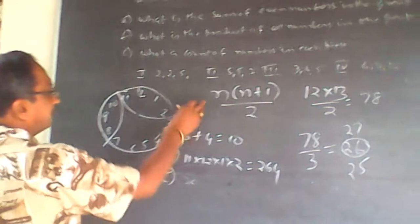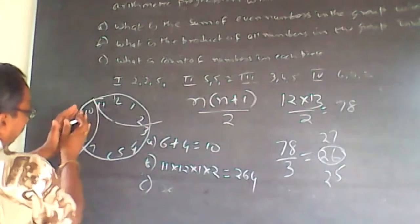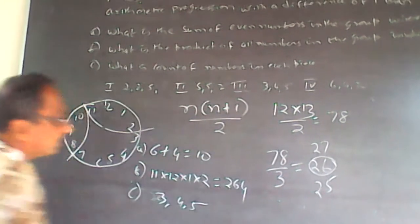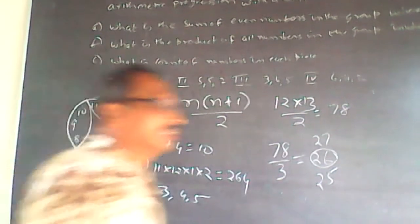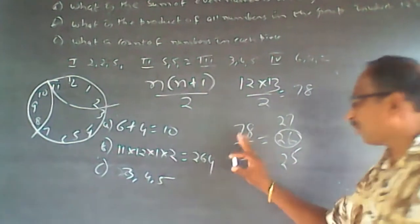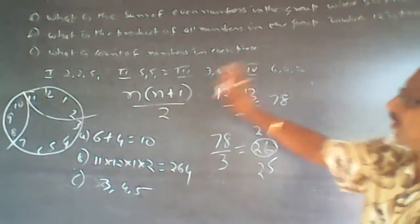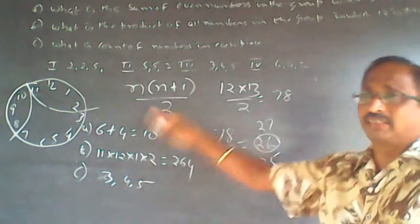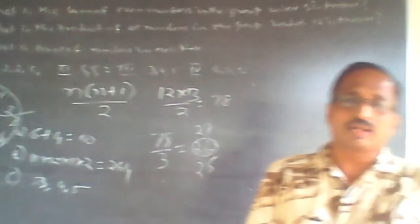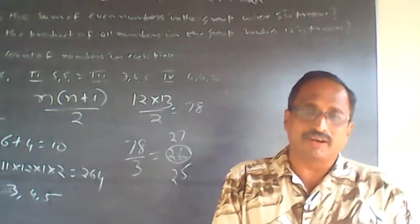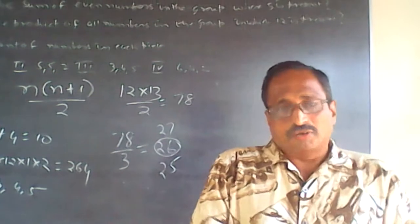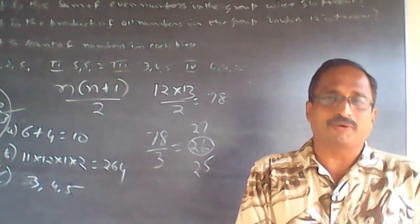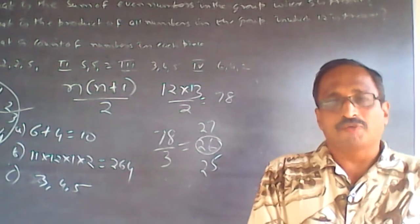For C, the count of numbers in each piece: the piece with 12 has 4 numbers, another piece has 3 numbers, and the third has 5 numbers — so the answer is 3, 4, and 5. This is a logical reasoning question where arithmetic progression rules and the sum of n numbers formula are applied. Subscribe to my channel; I will be adding questions every now and then. You can also subscribe to my website and take online aptitude tests. Wish you all the best.